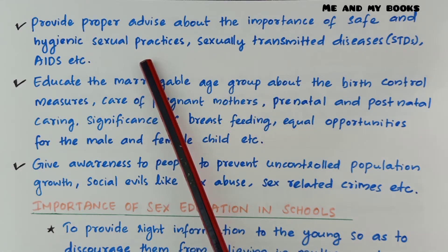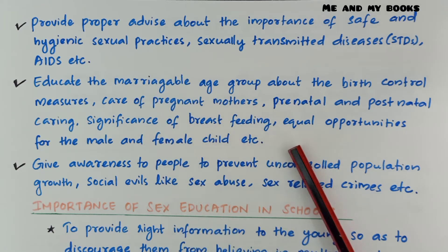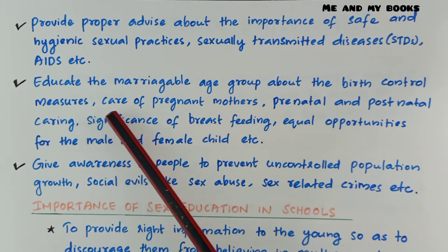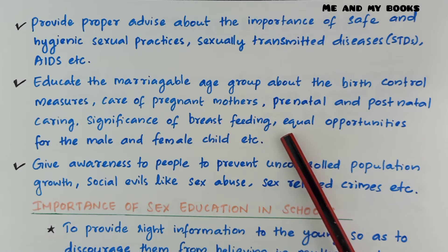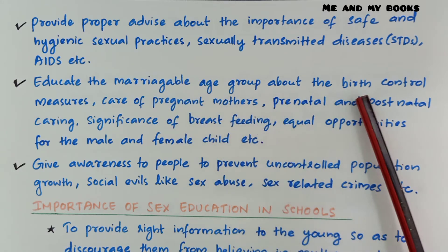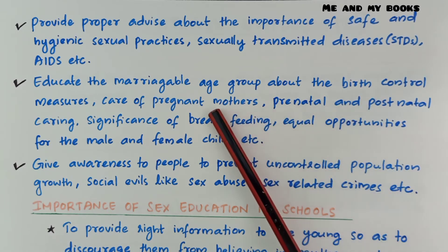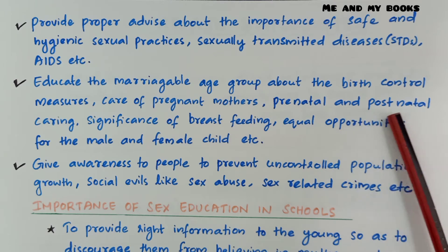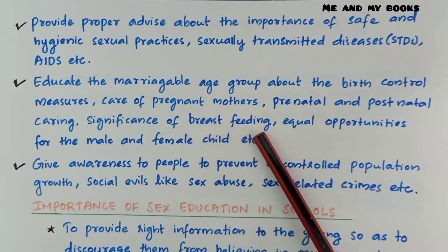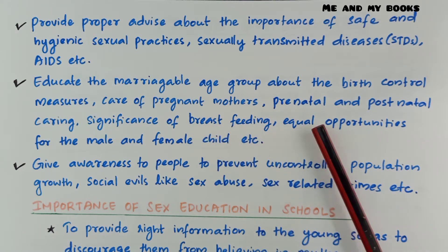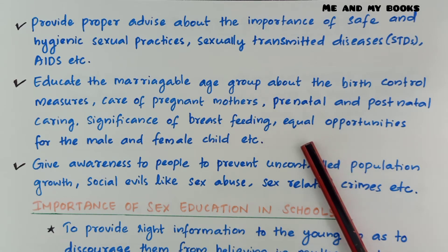We also need to educate the marriageable age group about birth control measures, care of pregnant mothers, prenatal and postnatal caring, and the significance of breastfeeding. Prenatal means before birth and postnatal means after birth — taking care of the baby or fetus before and after birth. Equal opportunities for the male and female child are also important.